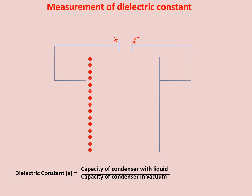इसी तरह से जो storage battery का negative terminal है, वहाँ से जो negative charge है, it will start to move और वो इस plate पे जाके deposit होगा, so इस plate पे negative charge develop होगा. यह process — movement of electrons from this plate to positive terminal — चलता रहेगा, until a stop point आएगा.